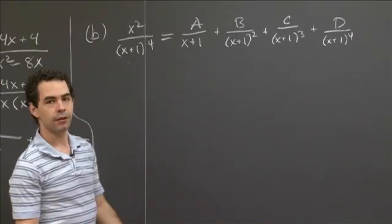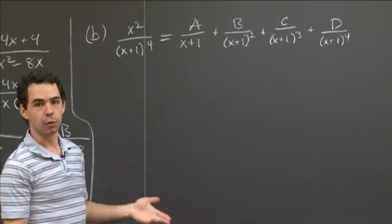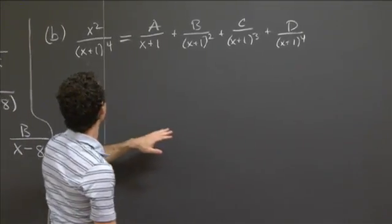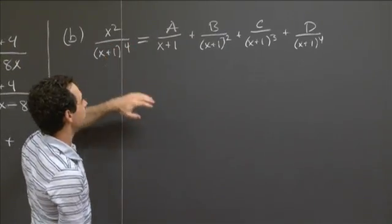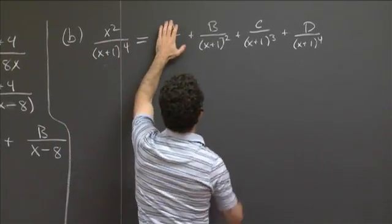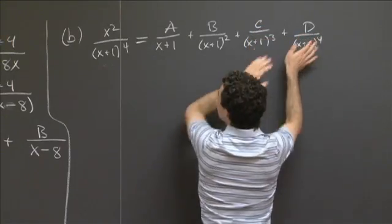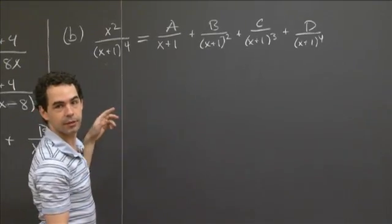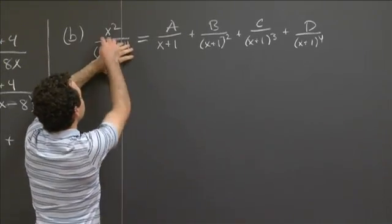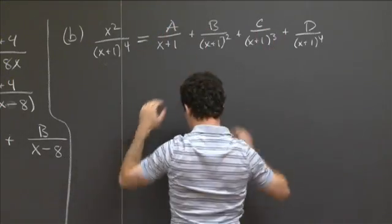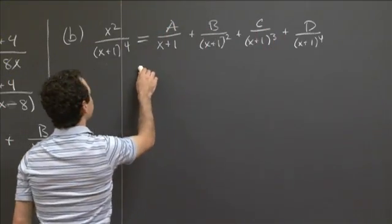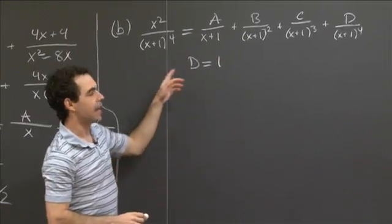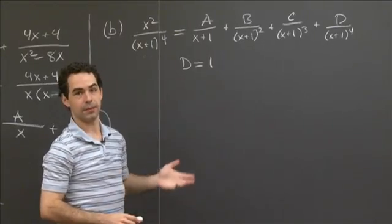The cover-up method works here, but it only works to find the highest degree term. Cover up (x+1) to the fourth, cover up everything with a smaller power of (x+1), then plug in x equals negative 1. Over here, negative 1 squared is 1, so D equals 1. But that doesn't give us A, B, or C — we can't get those by the cover-up method.